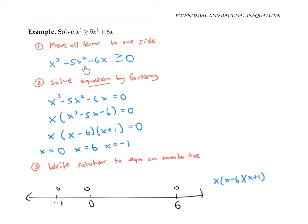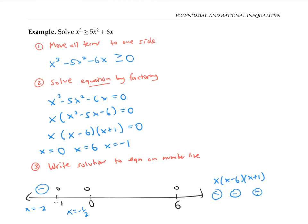I want to find where the expression is greater than or equal to zero, so I'll use test values. Since I only care whether the answer is positive or negative, it's sometimes easier to use the factored form. For x equals negative two: the factor x is negative, x minus six is also negative, and x plus one gives negative one — also negative. A negative times a negative times a negative gives a negative. For x equals negative one half, between negative one and zero: x is negative, x minus six is negative, but x plus one is positive. Negative times negative times positive gives a positive.